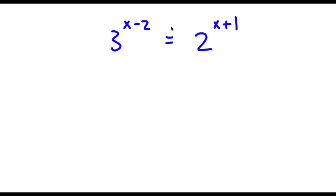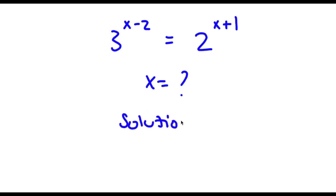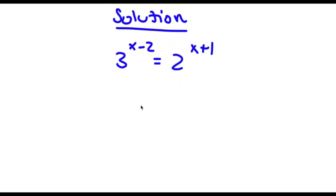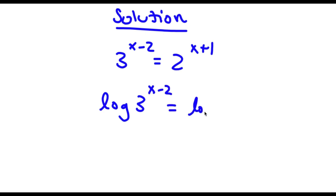Alright, so I have 3 to the power of x minus 2 is equal to 2 to the power of x plus 1. I want to find the value of x. Starting with 3 to the power of x minus 2 is equal to 2 to the power of x plus 1, I'm going to take the log on both sides. So now I have log of 3 to the power of x minus 2 is equal to log of 2 to the power of x plus 1.